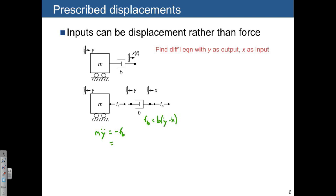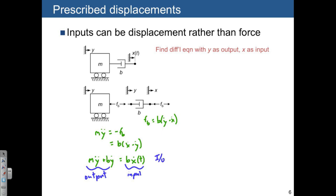Rearranging these equations, we get m*ÿ + b*ẏ = b*ẋ. In other words, all outputs of interest are on the left in input-output form, and since we're treating x as the input, the input terms are on the right. This is the input-output form we were looking for. Notice that we treated a displacement as an input and were able to derive a differential equation relating the input and the output.